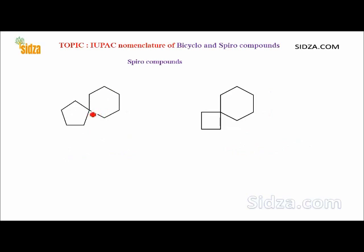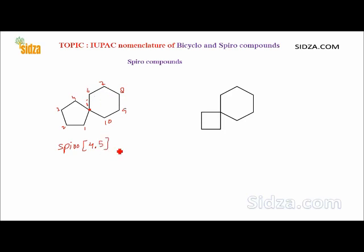Here is another molecule. The spirocarbon is identified and numbering starts from the smaller ring: one, two, three, four, five, six, seven, eight, nine, ten. There are four carbon atoms in the smaller ring and five in the larger ring — so spiro[4.5]. The total number of carbon atoms is ten: spiro[4.5]decane.